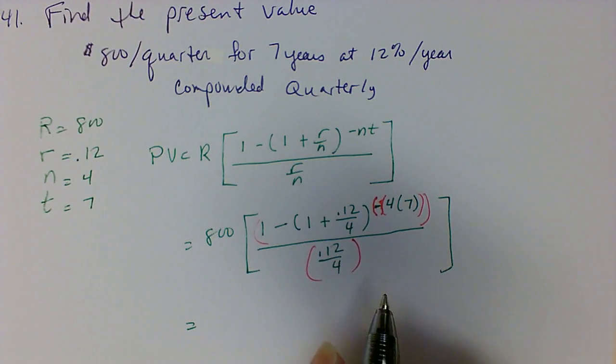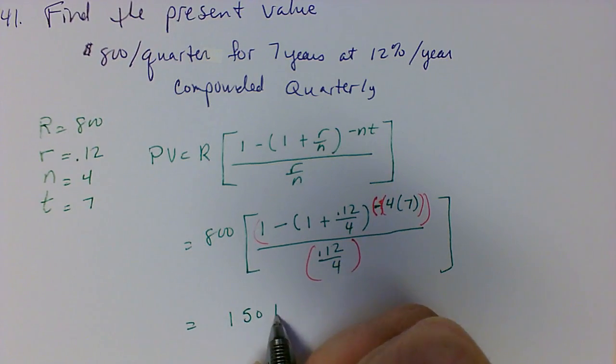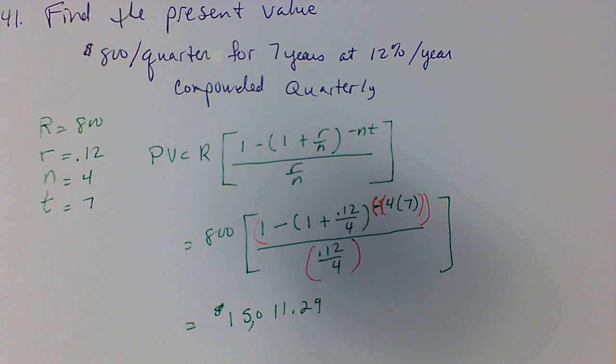All right, so when you plug that all in, if you get it in your calculator correctly you should get 15011.29. So $15,011.29.